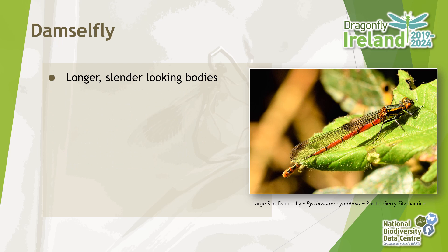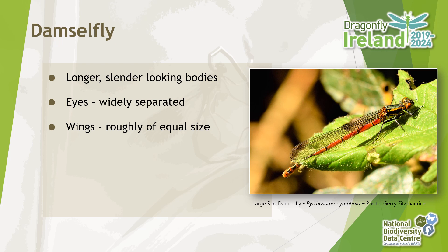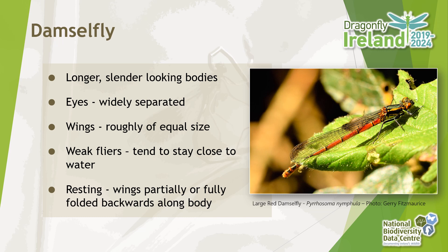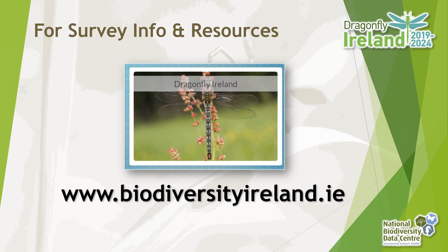Damselflies are longer with slender-looking bodies. Their eyes are widely separated on stalks either side of their head. Their fore and hind wings are of roughly equal size, and they're weaker flyers that tend to stay much closer to sources of water. When resting, damselflies will lay their wings either fully or partially back along the body.